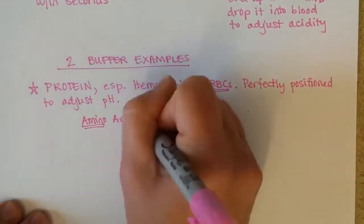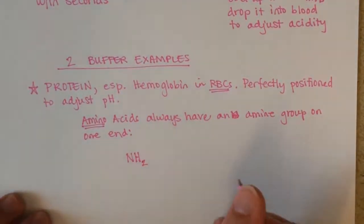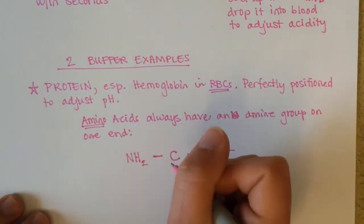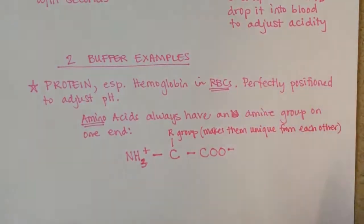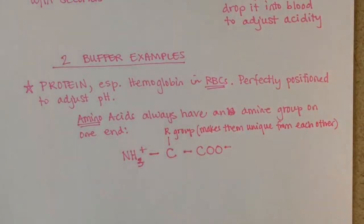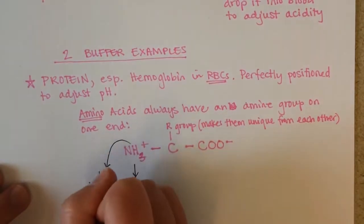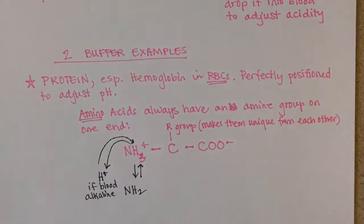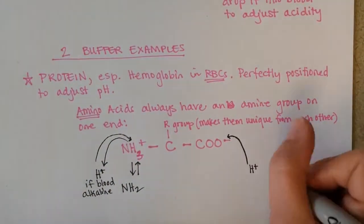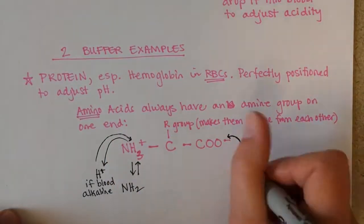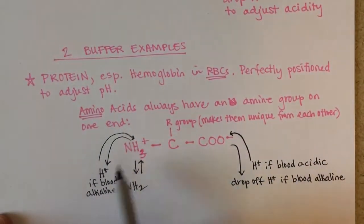Amino acids always have an amine group on one end, a carbon center, and then they have a carboxyl group. They also have an R group which makes them unique from one another. If the blood is too alkaline, the NH3 can actually drop off hydrogen to become NH2. If the blood is acidic, it can grab that hydrogen and hold it close so it no longer affects blood pH. The protein can do the same thing on its other end — if the blood is acidic, it can grab hydrogen and hold it close so it no longer makes the blood acidic, or it can drop off hydrogen if the blood is too alkaline.